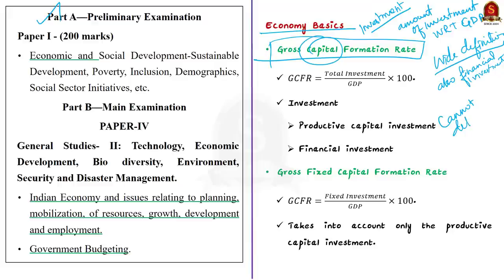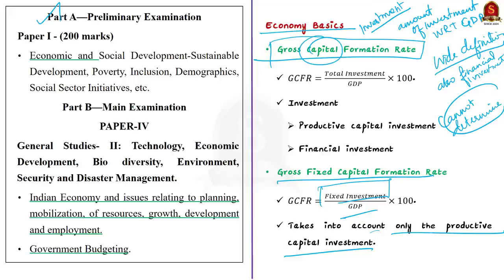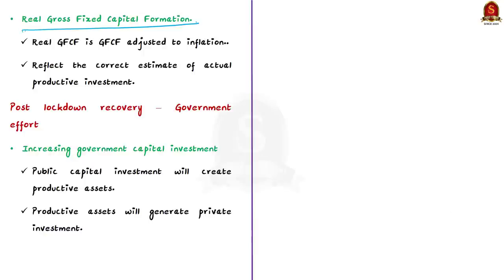This is where the next economic term comes in: gross fixed capital formation rate. The gross fixed capital formation rate is the ratio of fixed investment to GDP. Fixed investment or fixed assets include only physical assets like construction, machinery, and roads. The final term is real gross fixed capital formation. Gross fixed capital formation at current prices is not accounted for inflation, whereas real gross fixed capital formation is GFCF at constant prices, adjusted to inflation. This provides the truest estimate of actual productive investments made in India.